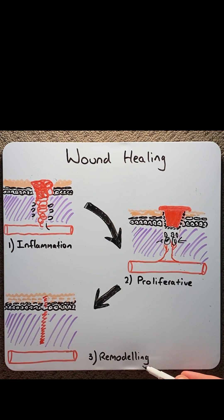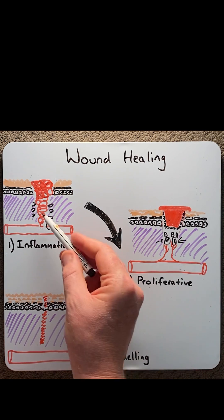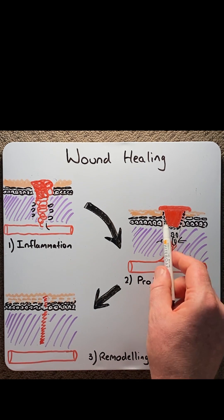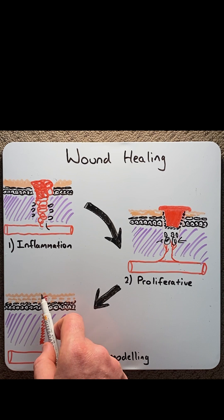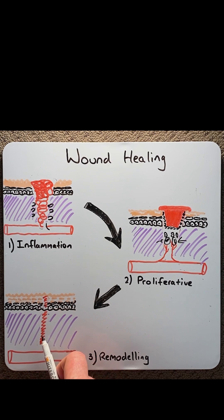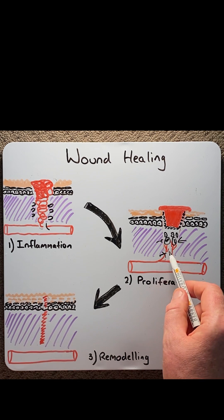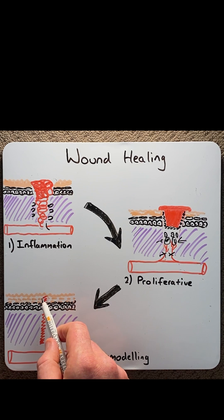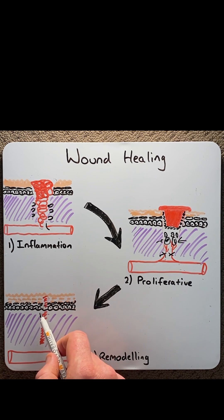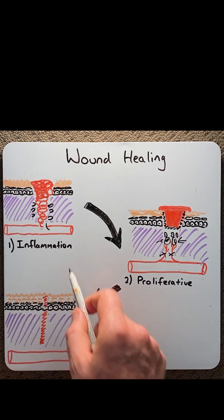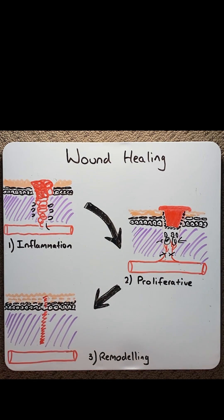Finally, moving to the remodeling phase. This begins three weeks after the initial injury. That granular tissue starts to become more scar tissue. This scar tissue becomes avascular, meaning it loses its blood supply. The collagen will start to retract, and then finally the scar will fade away in time and the tissue will go back to its original form.